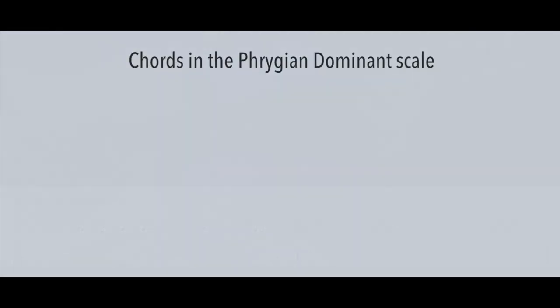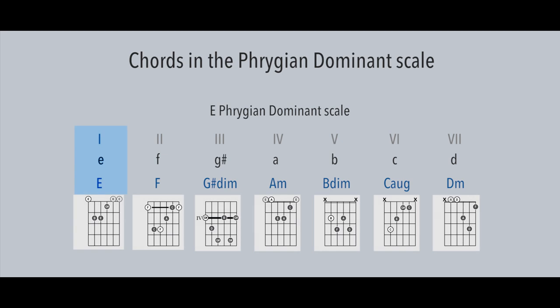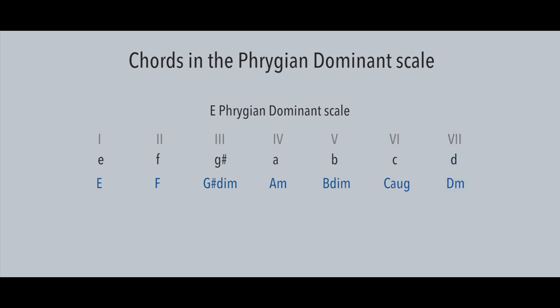If we harmonize the Phrygian dominant scale, we'll see these chords: on the 1st degree a major chord, on the flattened 2nd degree a major chord, on the 3rd degree a diminished chord, on the 4th degree a minor chord, on the 5th degree a half-diminished chord, on the 6th degree an augmented chord, and on the 7th degree a minor chord. As you can see, only the first two chords are major chords, and all the others are minor or diminished.